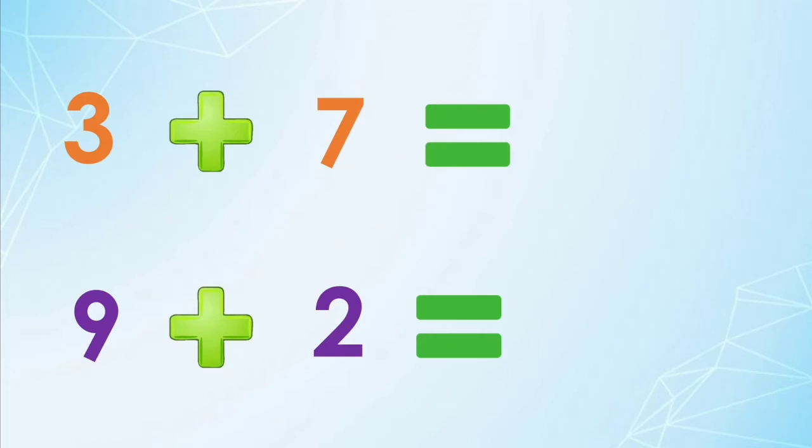3 plus 7. First, you have to decide which is the bigger number. Is it 3 or 7? Good job! It's 7, so you think of the next number to 7 and you will just add 3. 7, 8, 9, 10. And the answer is 10. So 3 plus 7 equals 10.